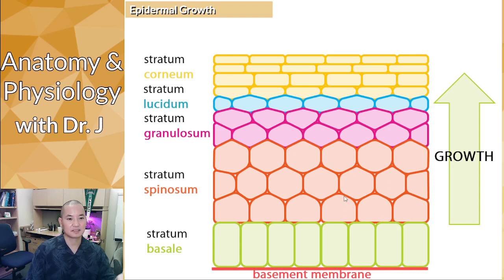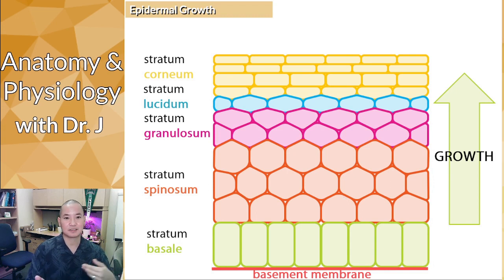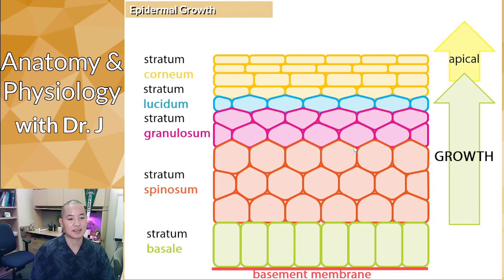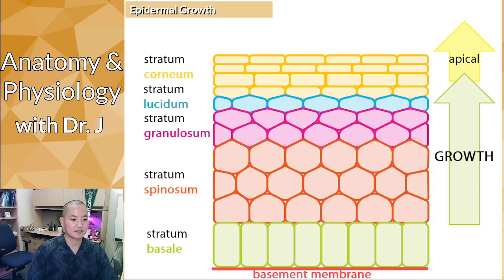Cell growth goes from deep to superficial, even though mnemonics may list layers from superficial to deep. Remember the apical and basal terminology: basal is at the basement membrane, and growth moves toward the apical side of these cells.